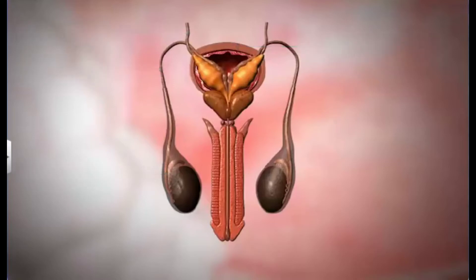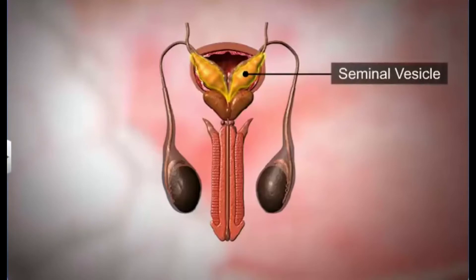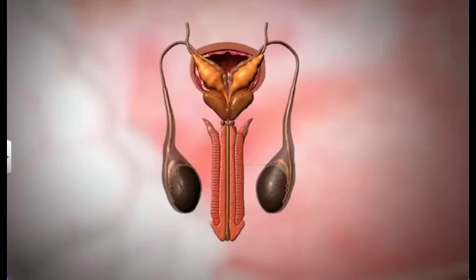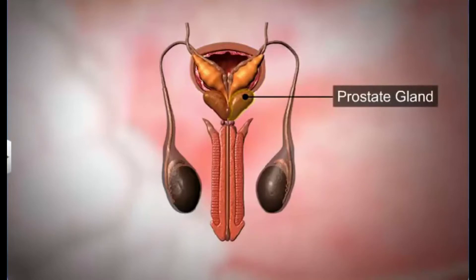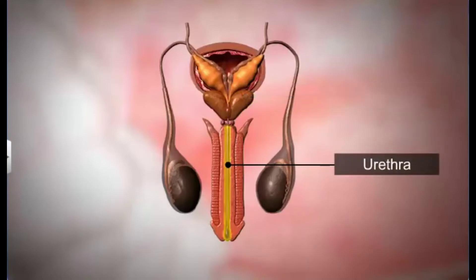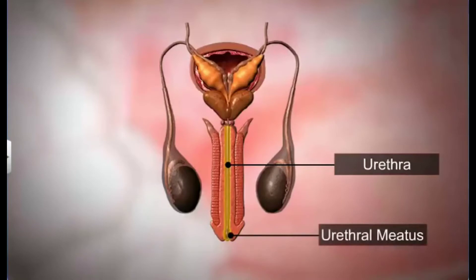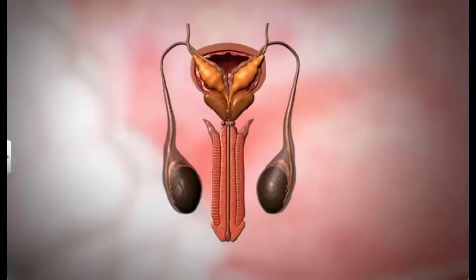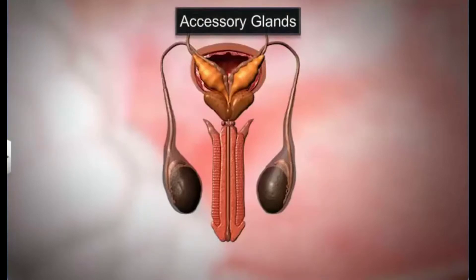The vas deferens ascends into the abdomen and curves around the ureter, looping over the urinary bladder. It extends backwards and receives the duct from the seminal vesicles, and finally opens into the urethra as an ejaculatory duct. The neck of the urinary bladder and prostate gland open into the urethra, also called the urinogenital canal. The urethra extends through the penis to its external opening called the urethral meatus or urinogenital aperture. The urethra is the common passage for urine and semen.